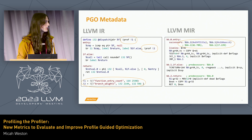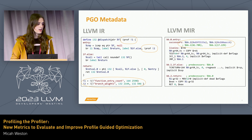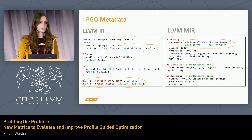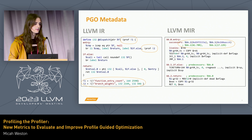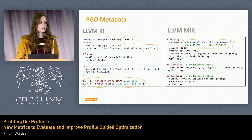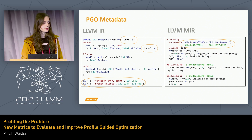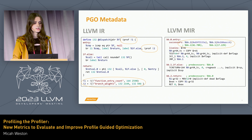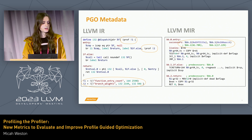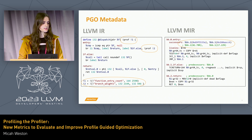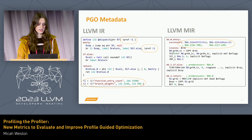An overview of what the information in the compiler looks like: this mainly takes the form of metadata. There are the prof labels in the regular IR, which has function entry counts as well as branch weights. This sort of information is used to derive the branch probability info analysis and block frequency information — the analysis passes that optimizations are generally going to use — but they do have to go back and sometimes adjust these weights on CFG changes. Once it gets lowered down into MIR, this takes the form of successor probabilities as well as some of the profile summaries.